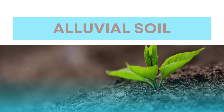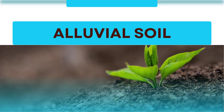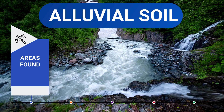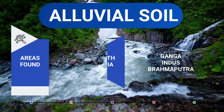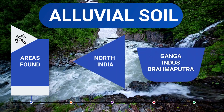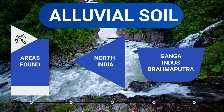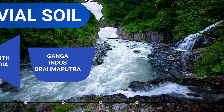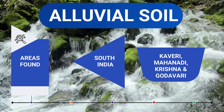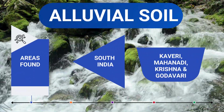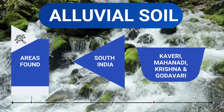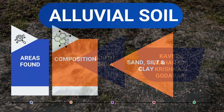The first soil type is Alluvial Soil. This alluvial soil is found in northern India along the river valleys of the Ganga, Indus and Brahmaputra in the east. Towards the south, it is found along the river valleys of Kaveri, Mahanadi, Krishna and Godavari rivers.